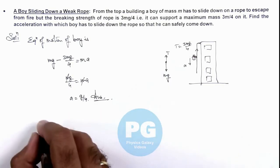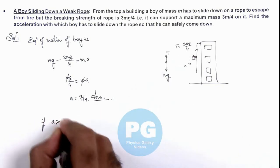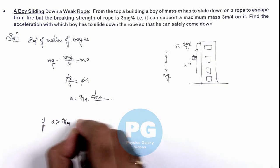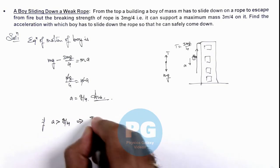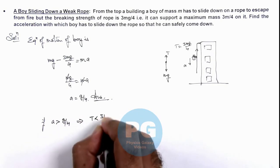We can also write that if a is greater than g/4, this implies the value of tension is less than 3mg/4.